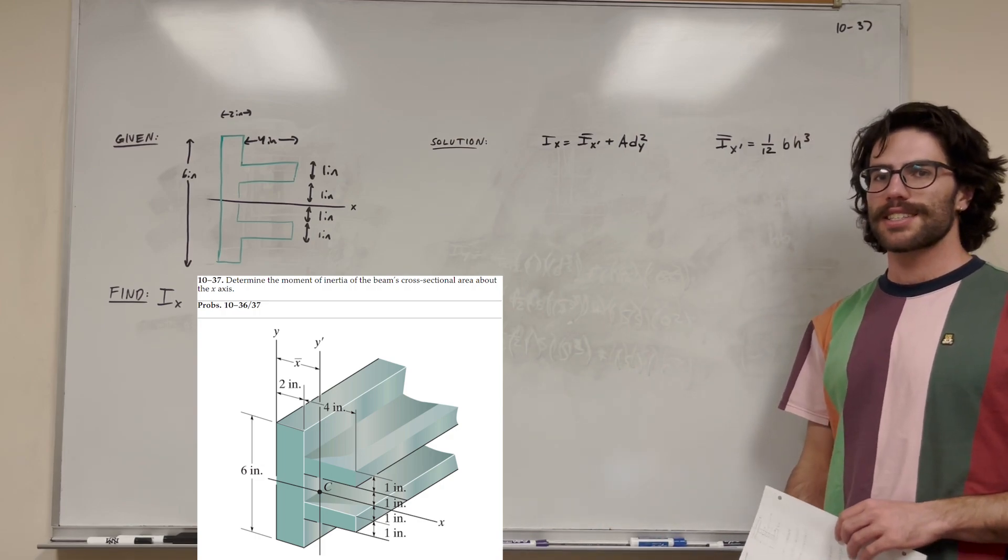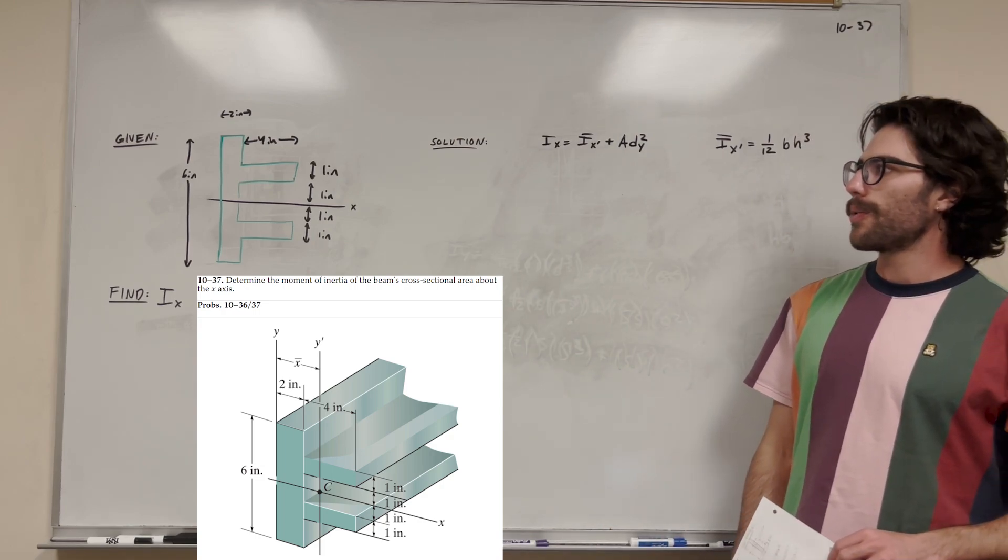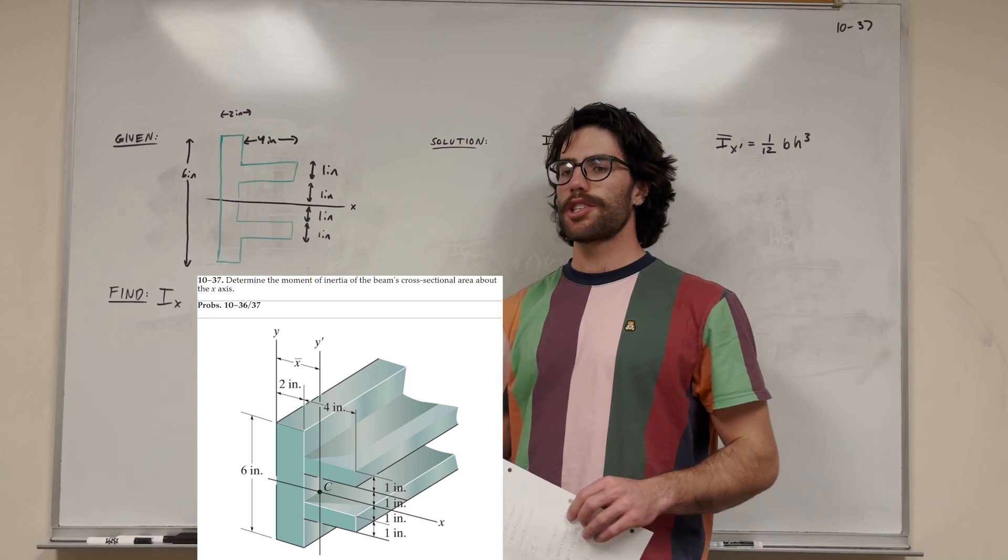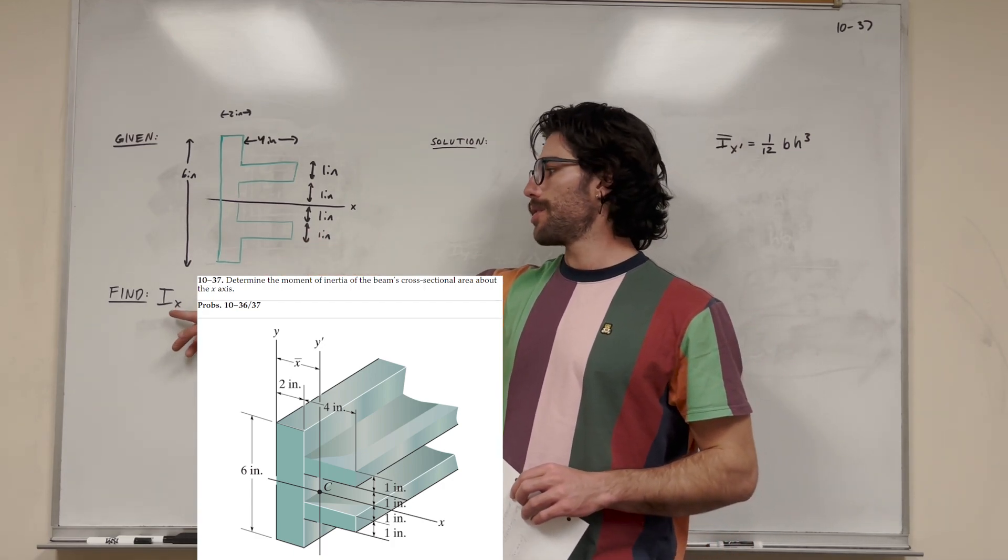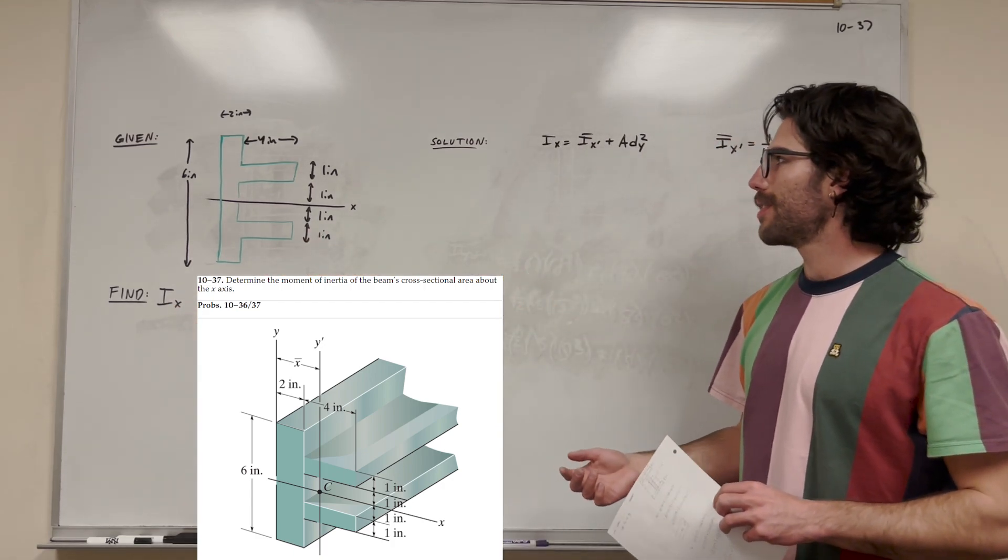What's up, Kyle Gang? Welcome back to Static. So, let's solve this problem. We got the shape here, and we're trying to find the moment of inertia around the x-axis, which is denoted i-x. So, let's do that.